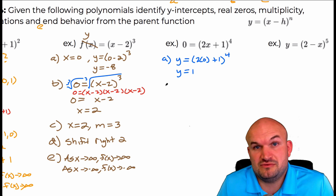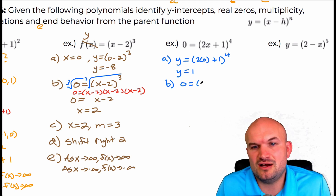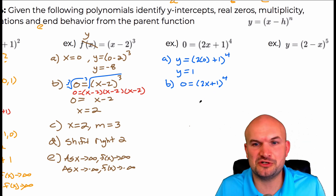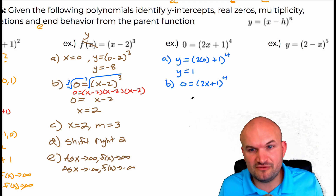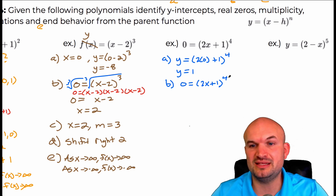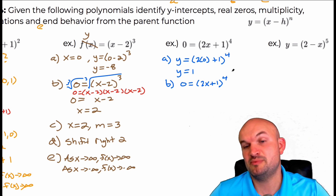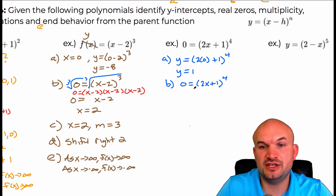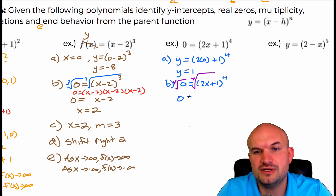To find the zeros, it's already written as a function equal to zero, so I just solve for x. We see we're going to have one zero — one real zero — repeated four times. We can use the fourth root property, taking the fourth root of both sides. The fourth root of zero is just zero. So zero equals two x plus one. Subtract one, divide by two: x is equal to negative one half.